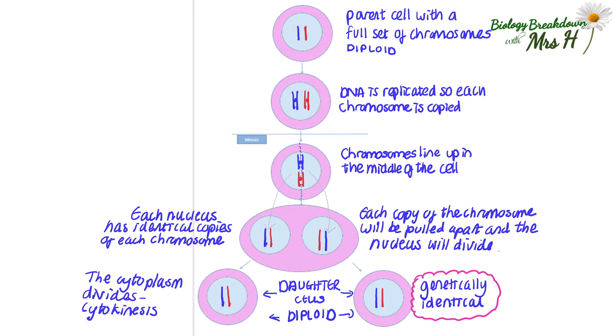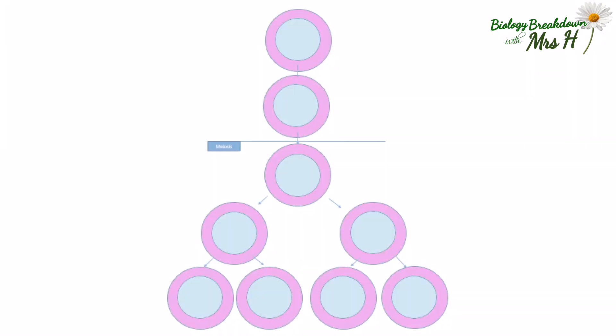Mitosis occurs in all cells of the body except for the making of the sex cells, sperm and egg, which are also known as gametes.